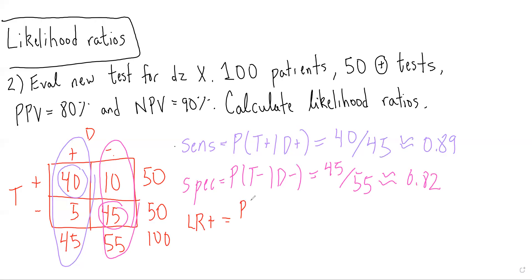That's the probability of a positive test given you have the disease over the probability of a positive test given you don't have the disease - with over without - which is sensitivity over 1 minus specificity. That equals 0.89 over 0.18, which is about 5.